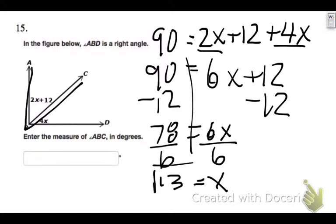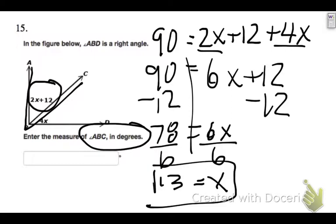But the problem is, this isn't the answer. This is what x is. The question says, what's the measure of the angle in degrees? This angle is not 13. This angle is 2x plus 12.